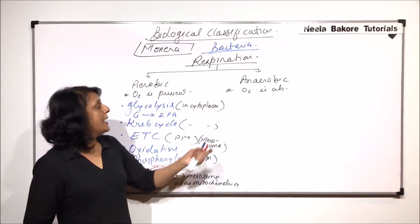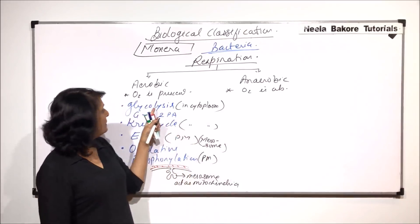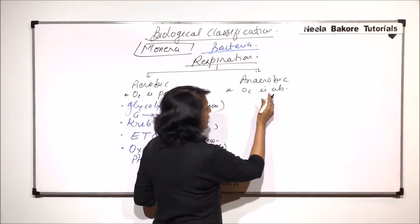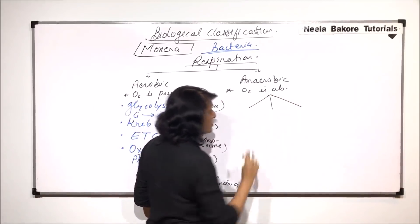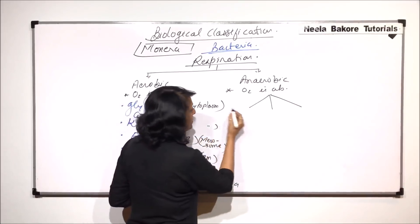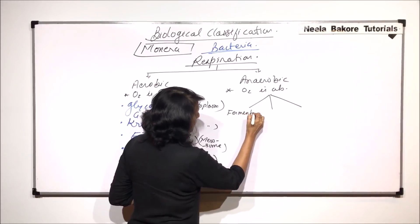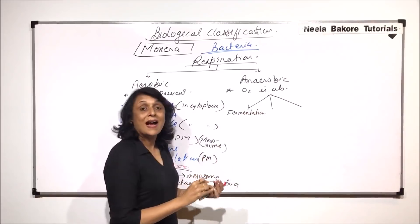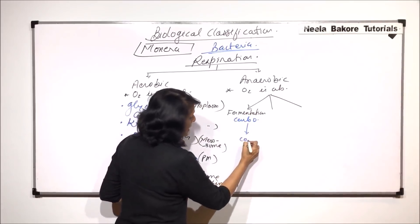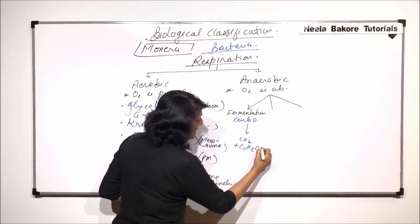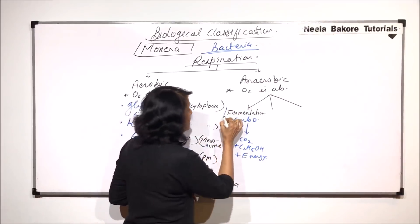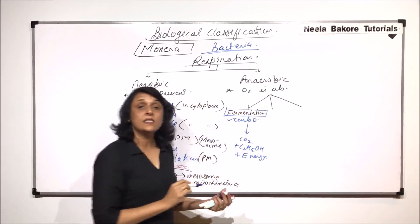Coming to anaerobic respiration — the first step is the same: glycolysis. But after that, there are multiple pathways depending on which raw material is being broken down. We divide it into three processes. If carbohydrate is broken down, the process is known as fermentation. In fermentation, carbohydrate is anaerobically broken down to release carbon dioxide and ethyl alcohol, plus energy in the form of ATP is generated.